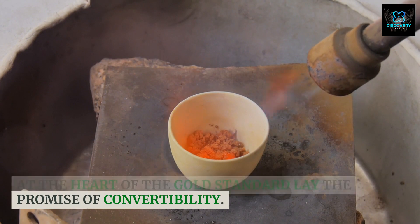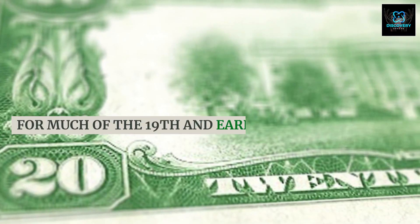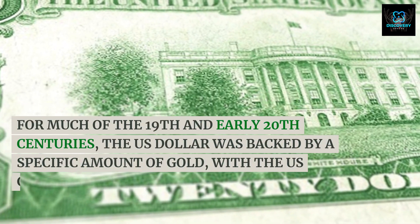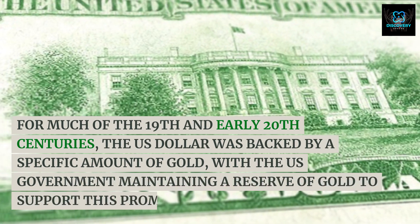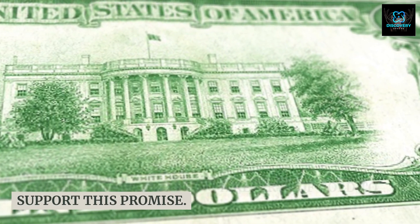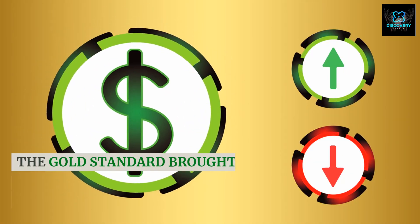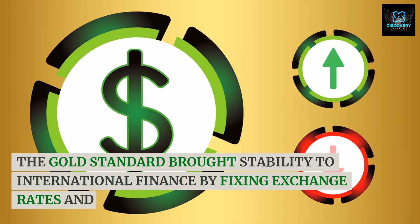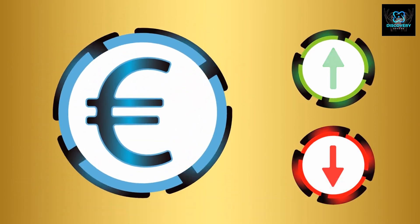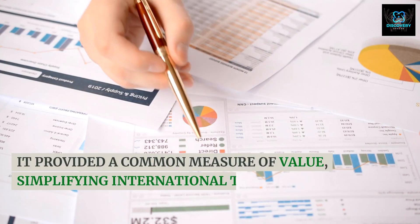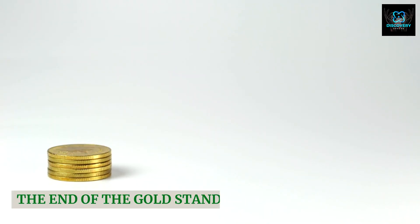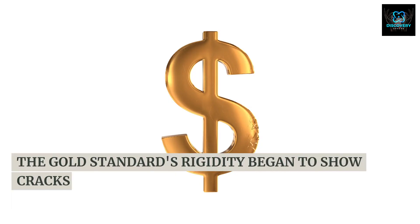At the heart of the gold standard lay the promise of convertibility. For much of the 19th and early 20th centuries, the U.S. dollar was backed by a specific amount of gold, with the U.S. government maintaining a reserve of gold to support this promise. The gold standard brought stability to international finance by fixing exchange rates and constraining inflation. It provided a common measure of value, simplifying international trade and investment.